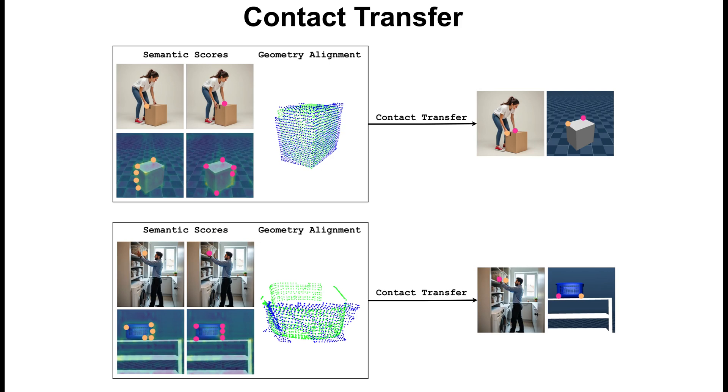Second, we transfer the contact locations from the generated images to the respective object in simulation using a sampling-based iterative approach that uses the semantic scores of a semantic-aware foundation model and the object's point clouds.